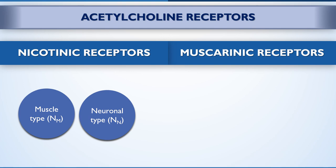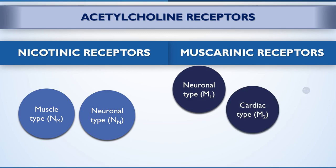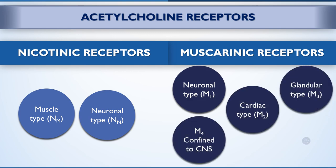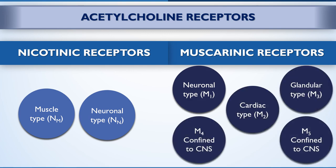This classification is based on the existence of selective agonists and antagonists. Muscarinic receptors are currently divided into five subtypes, from M1 to M5. Three of these — M1, M2, and M3 — are well characterized, while the characteristics of the remaining two, M4 and M5, are less certain.